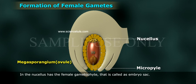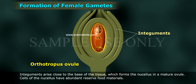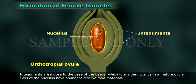In the nucellus is the female gametophyte, called the embryo sac. Ontogenetically, an ovule arises as a small mound of homogeneous tissue on the placenta. At this stage, the ovule looks orthotropous. Integuments arise close to the base of the tissue, which forms the nucellus in a mature ovule. Cells of the nucellus have an abundant reserve of food materials.